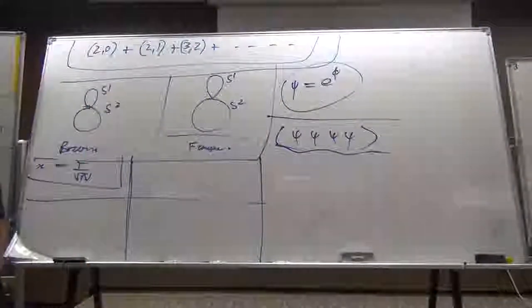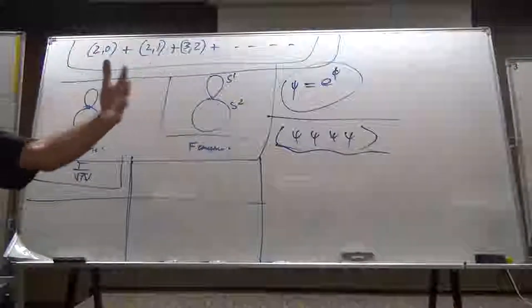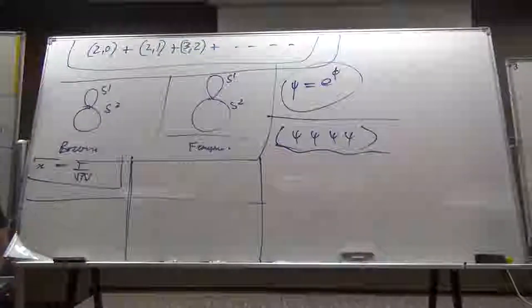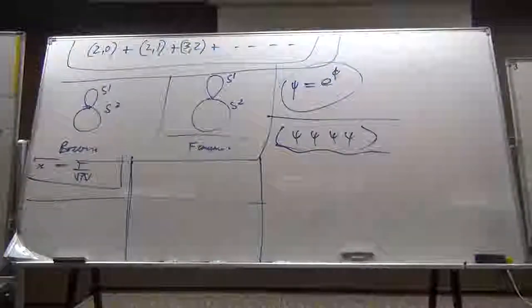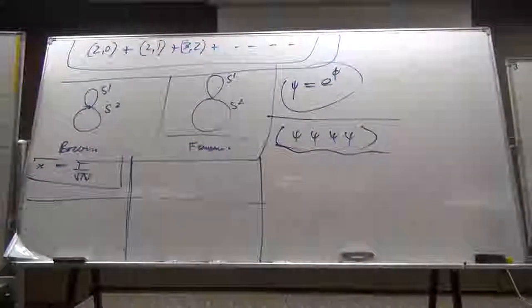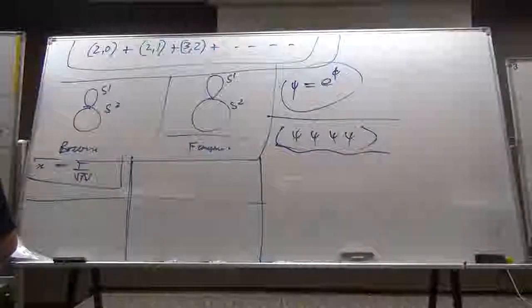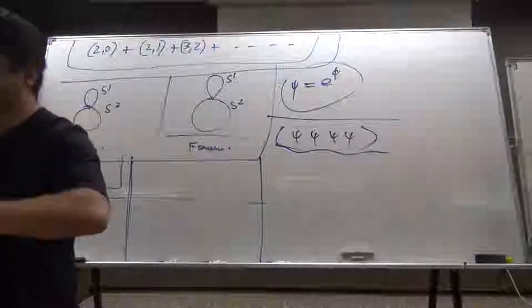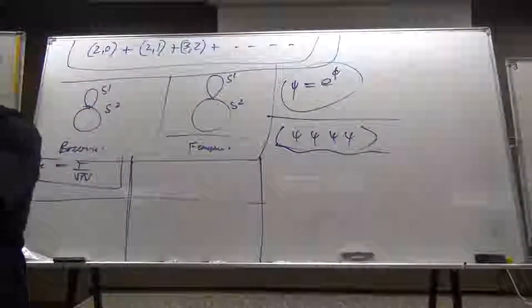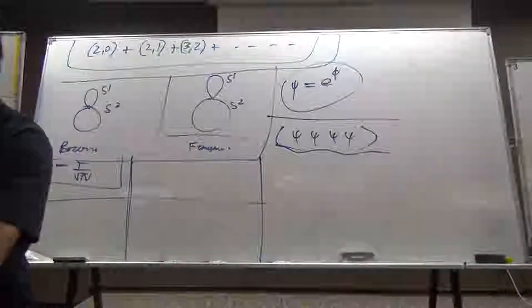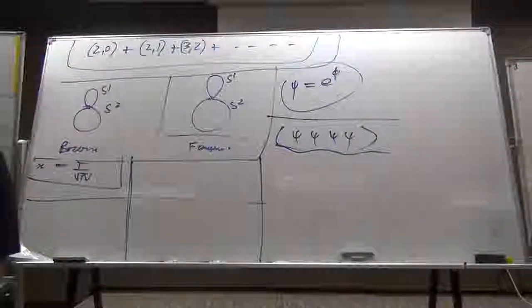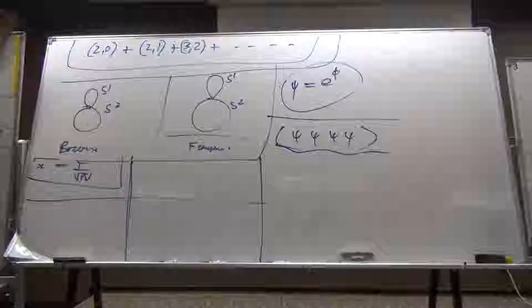At high temperatures, or equivalently fixed temperature and large size of the sphere, the theory basically doesn't know that it's on a sphere, so it behaves like R3, and there the free energy behaves like N squared times T to the 4. So because there are different powers of N, at least only in the large N limit, there's a precise order parameter — namely free energy divided by N squared — which is zero at low enough temperatures and non-zero at high temperatures. So there's a phase transition, basically between a gas of singlets, which are the analog of QCD glueballs, and a gas of gluons.